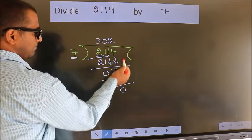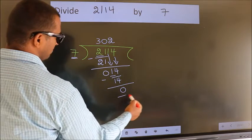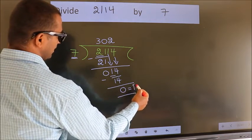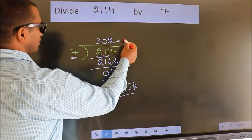No more numbers to bring it down. So we stop here. This is our remainder. This is our quotient.